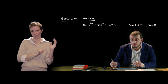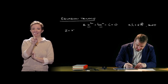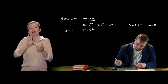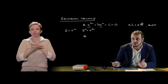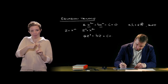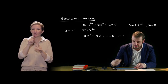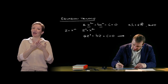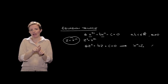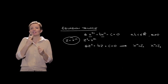Per risolvere le trinomie si usa un'incognita ausiliaria z, posta uguale a x^n, per cui z² = x^(2n). In questo modo trasformiamo l'equazione trinomia in un'equazione di secondo grado in z: az² + bz + c = 0. Si trovano i valori z₁ e z₂, poi si ritorna alla variabile x applicando la sostituzione: x^n = z₁ e x^n = z₂, risolvendo di fatto due equazioni binomie.